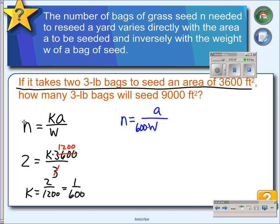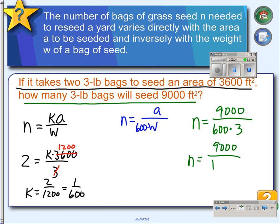Now we can use this equation to answer this question. How many 3-pound bags will seed 9,000 square feet? We put 9,000 in for A, because that's the area. 600 is our constant term, and the bags still weigh 3 pounds a piece. We get 9,000 divided by 1,800, which equals 5. So it takes 5 bags to seed that much yard.